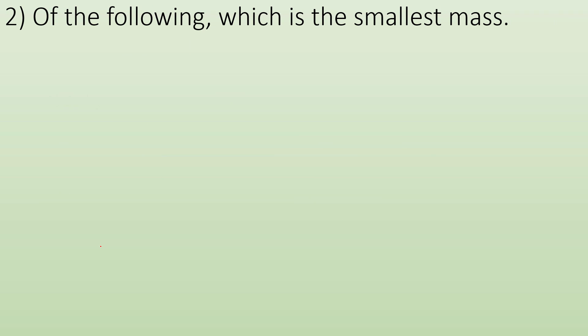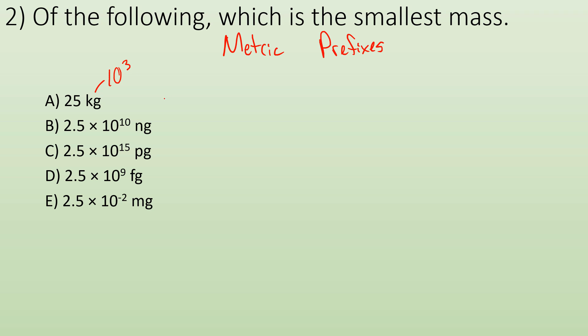Of the following, which is the smallest mass? And then here's five different masses. Now here, what you need to know is the metric system prefixes. So if we take a look, 25 kilograms, I know kilo means 10 to the third. So it's really 25,000 grams.